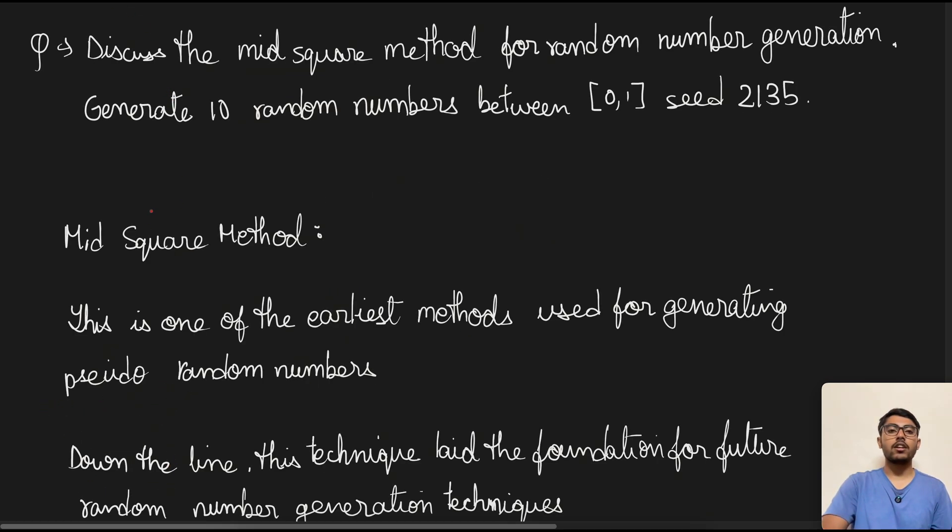Today we are going to look at another topic, which is mid square method for random number generation. So let's read the question first. Discuss the mid square method for random number generation, generate 10 random numbers between 0 to 1 with the seed value of 2135.